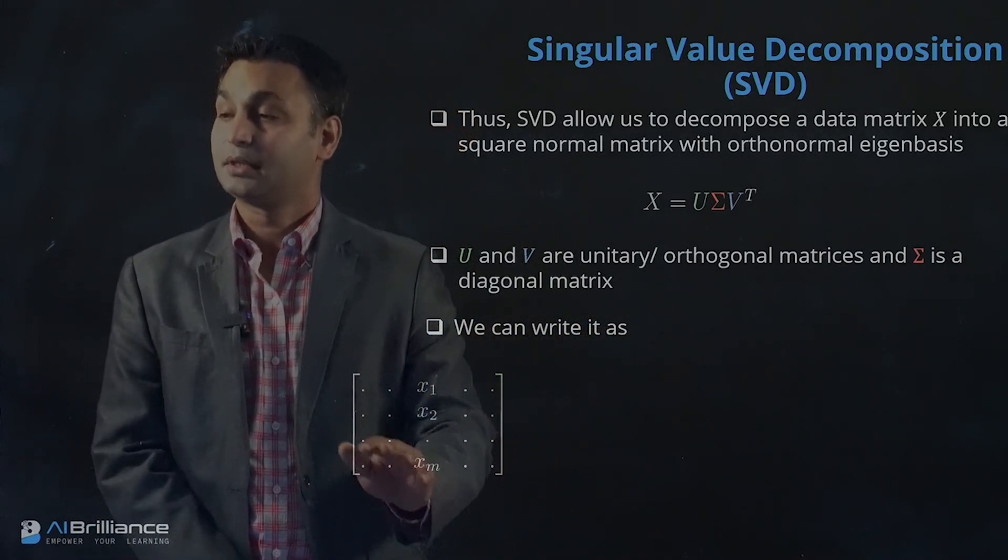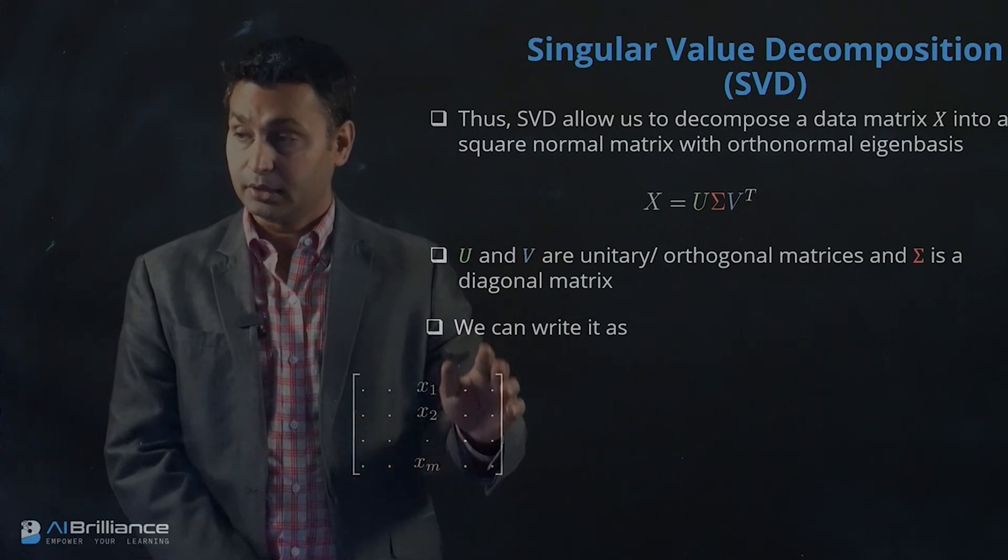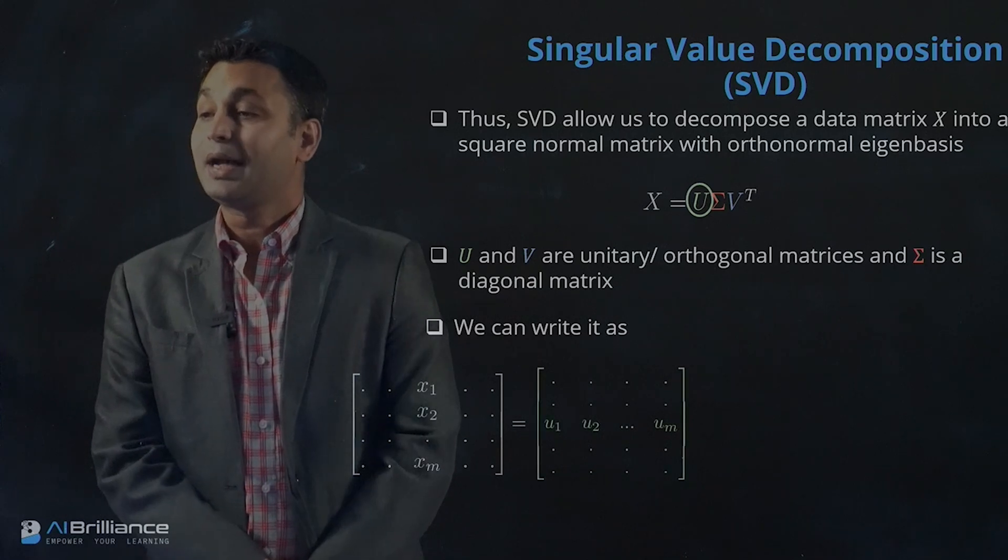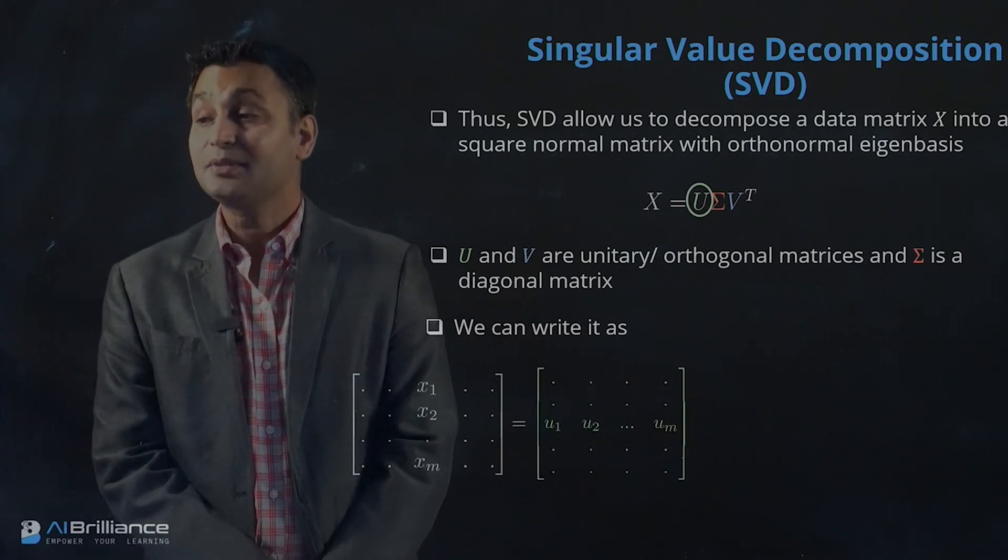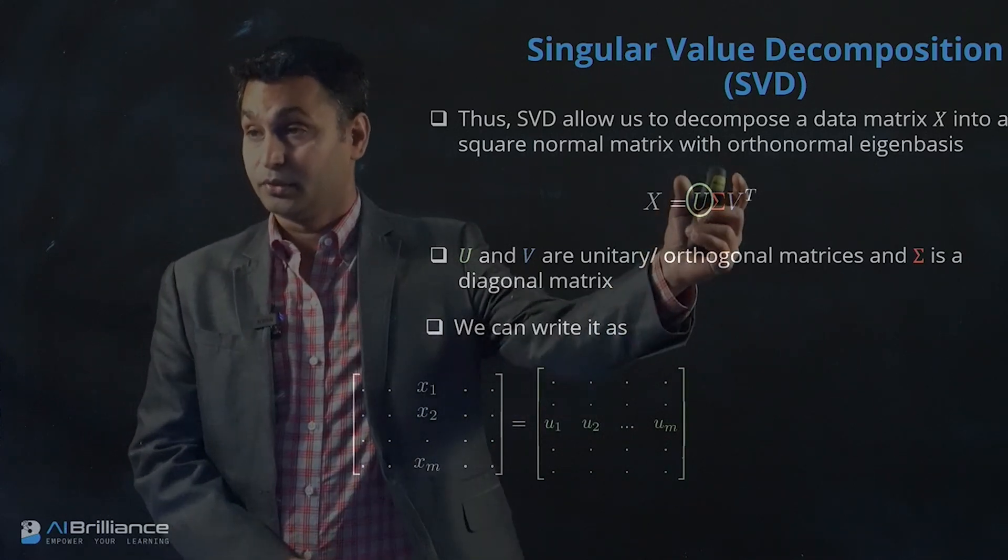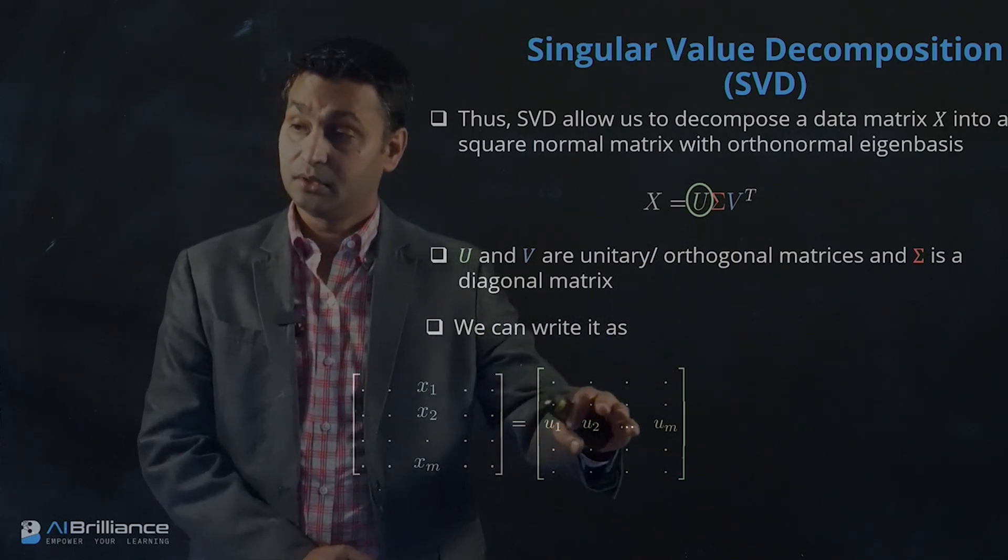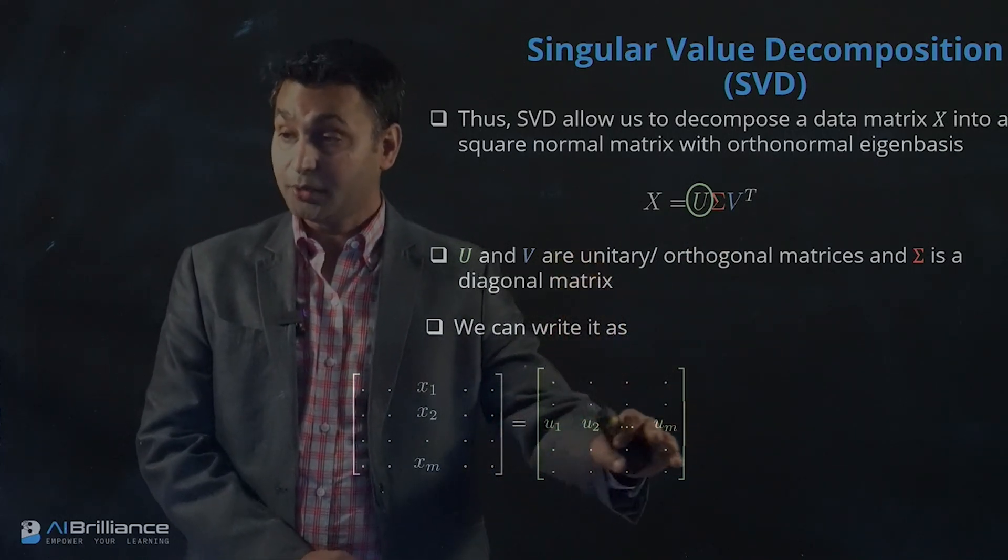If you have a matrix with m rows and n columns, we can write this matrix as a product of a U matrix which has m columns and m rows, multiplied by a diagonal matrix.